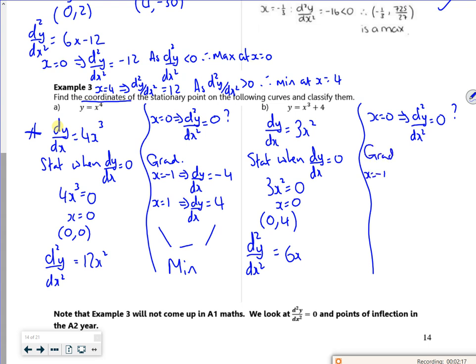So if I try x is minus 1, I've got 3 times minus 1 squared, which will give me 3. And if I try 1, which is on the other side of 0, I get 3 times 1 squared, which is 3. So at minus 1, it's positive. At 0, it's zero. At plus 1, it's positive. So that must be a point of inflection.